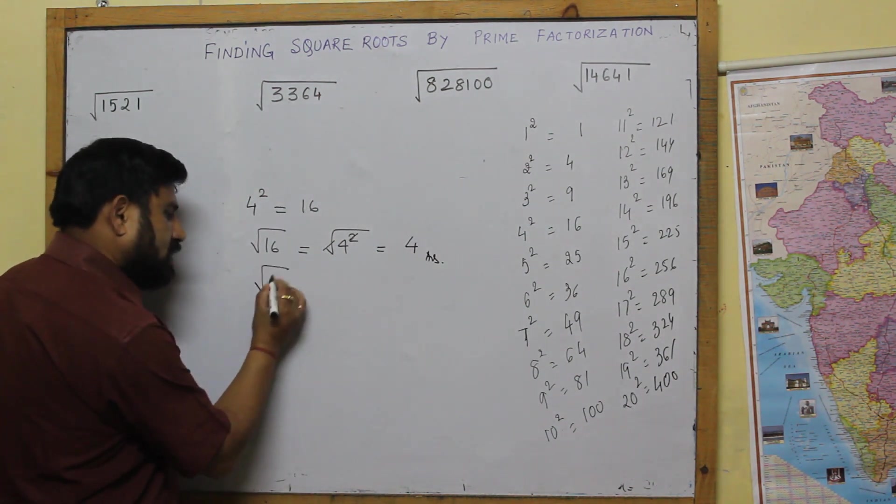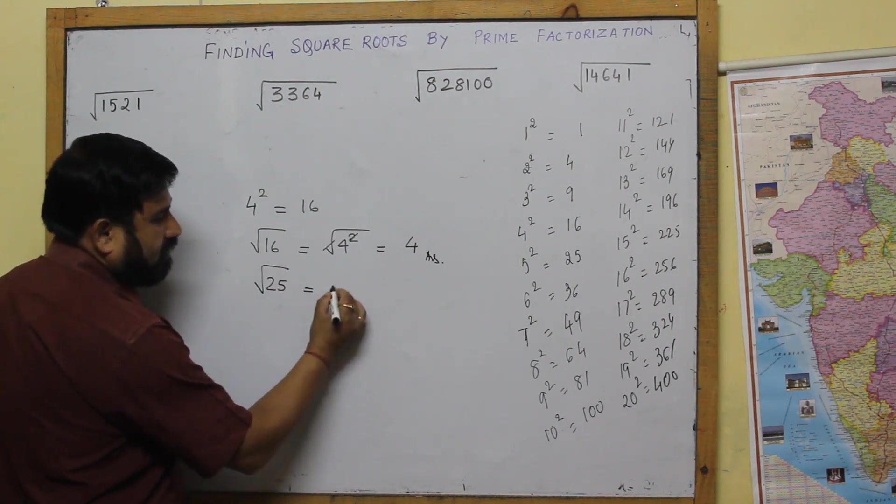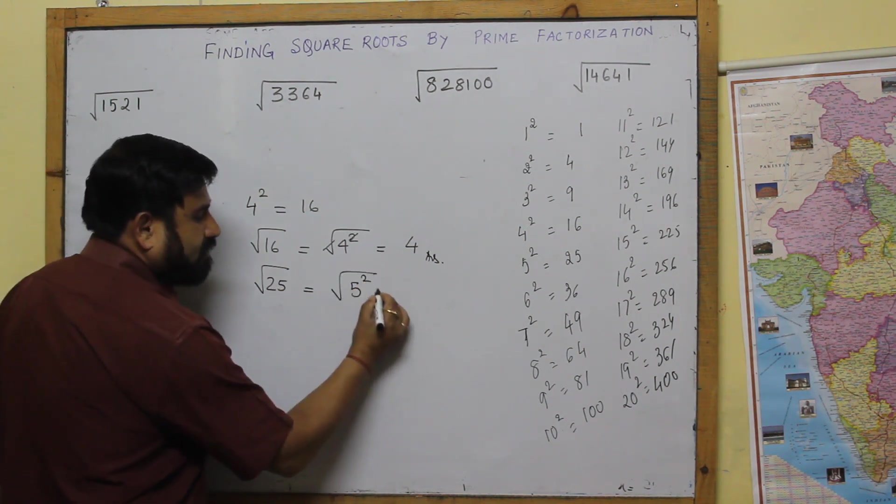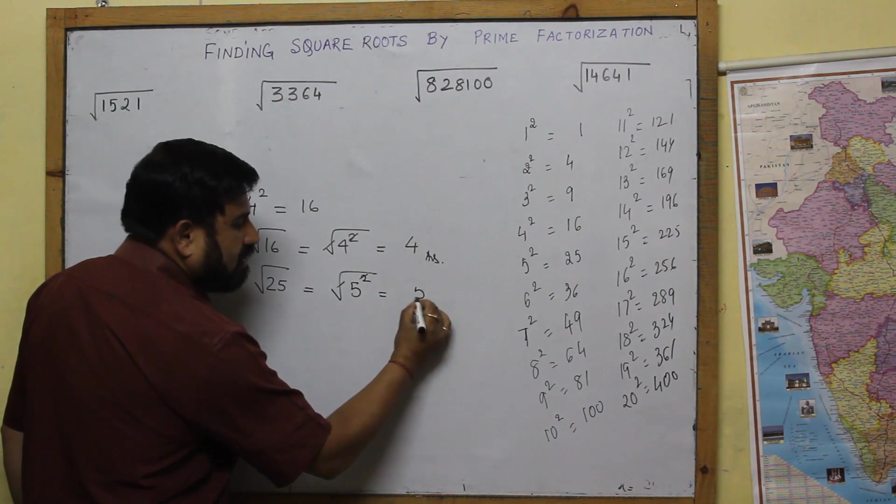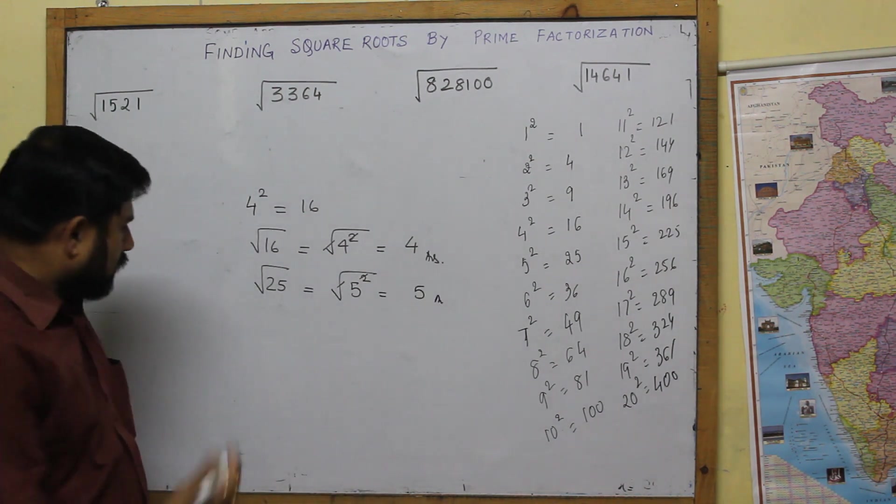Same way, suppose if they ask you square root of twenty-five. Straight away, five square. Cancels? Answer is five.